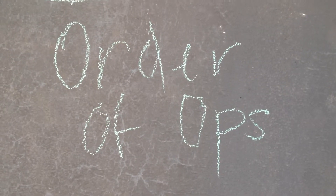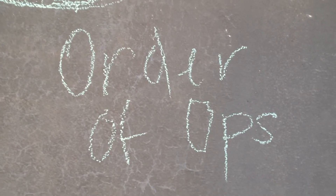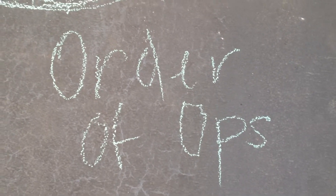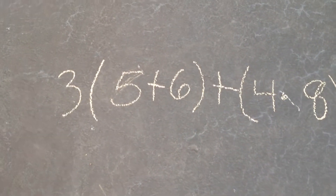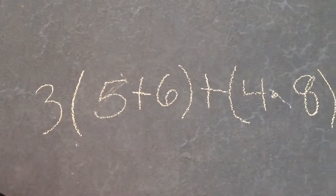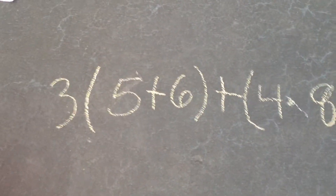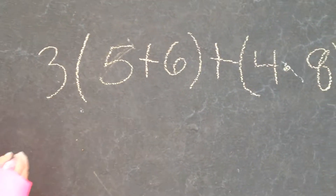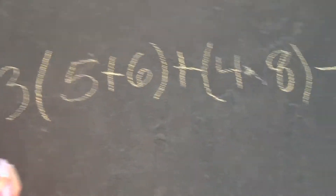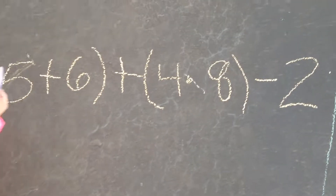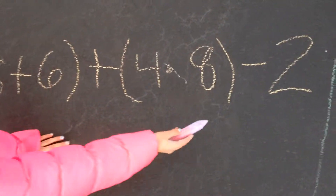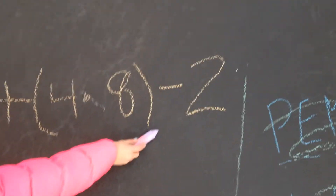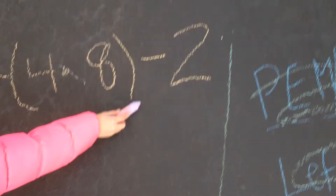This video is going to help you with your order of operations. Let's say we have the problem 3 times (5 plus 6) plus (4 times 8 minus 2).